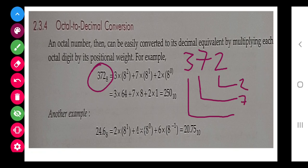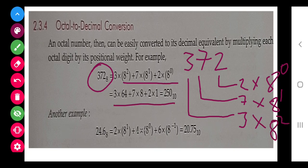Now 8 to the power 0, 8 to the power 1, and 8 to the power 2. You will get the same result: 3 into 8 to the power 2, 7 into 8 to the power 1, and 2 into 8 to the power 0. Now simply we have to solve and add them all up.